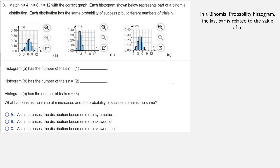In a binomial probability histogram, the last bar relates to the value of n. As the value of n gets larger, the last bar moves farther to the right on the histogram.